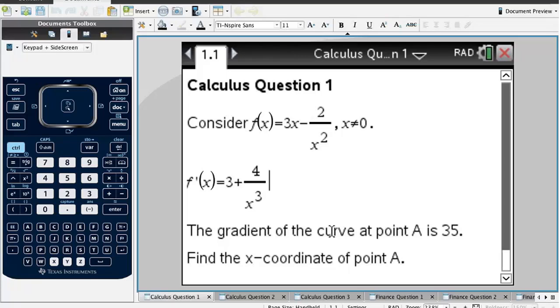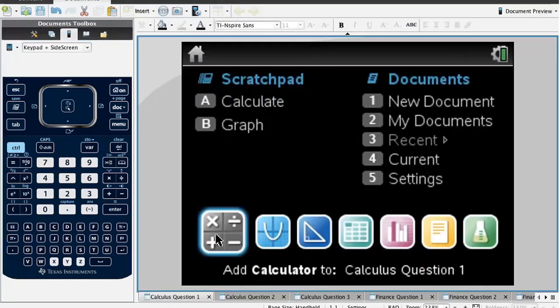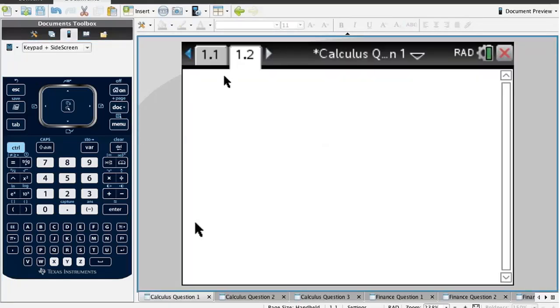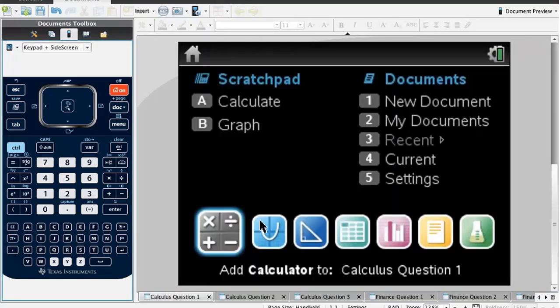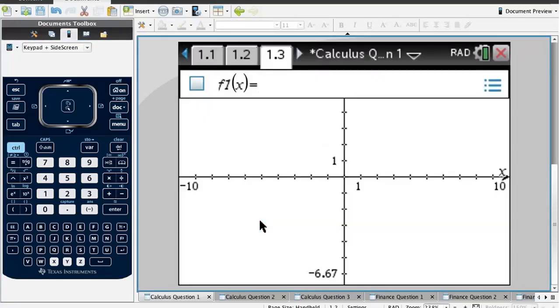So tonight I'm first going through some calculus questions, very similar to exam-style questions that I've found in studies exams in Paper 1. Here's our first question: consider this function fx. The gradient of the curve at point A is 35. Find the x-coordinate of point A. I've already found the derivative for you. So f dash x is 3 plus 4 over x cubed to help us along.